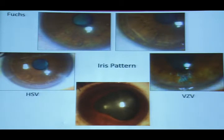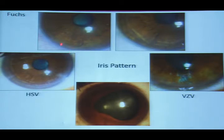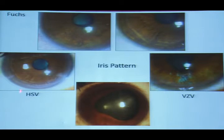The iris pattern can give many clues. In Fuchs' heterochromic iridocyclitis, there are subtle KPs all over the endothelium, and one needs to look carefully at the iris pattern alteration between the right and left eye; otherwise, these patients are treated unnecessarily. Depigmentary alterations may be more visible in herpes simplex virus uveitis, along with iridoperesis or sectoral iris atrophy, which are patterns seen in viral uveitis.